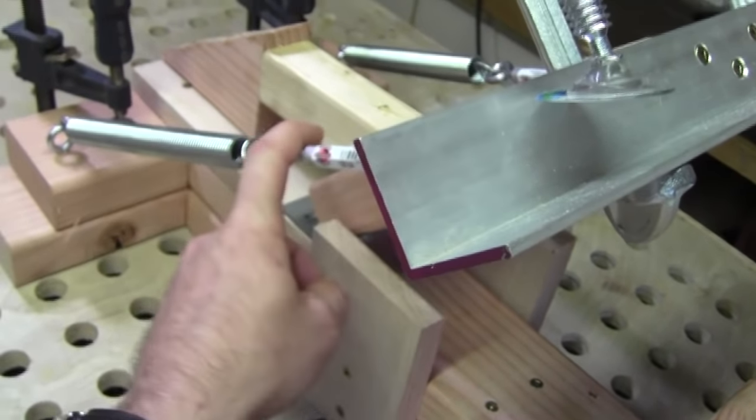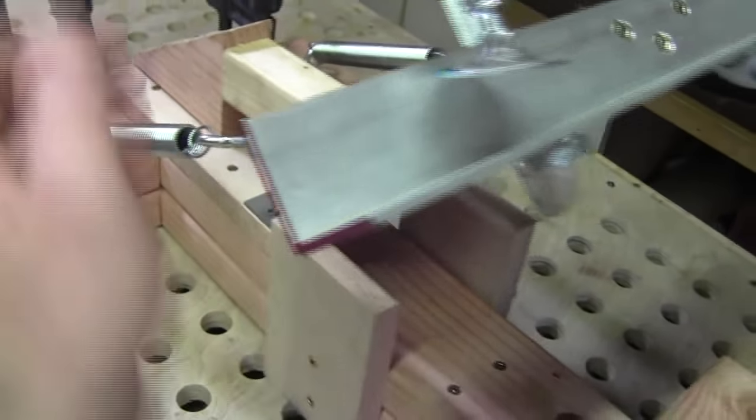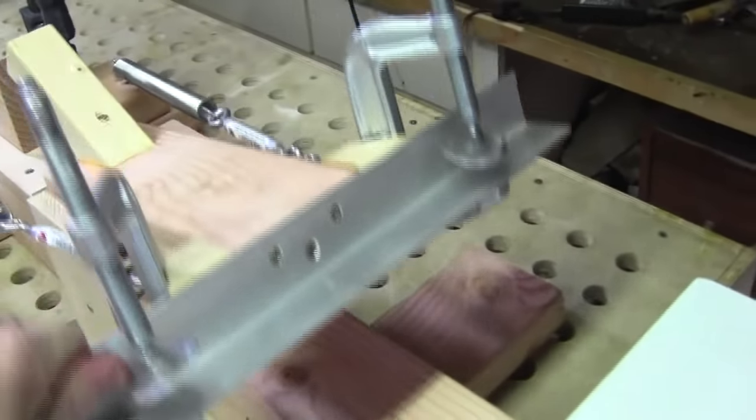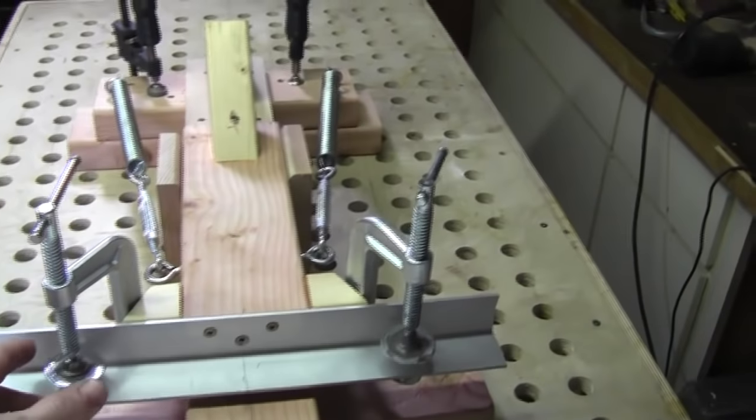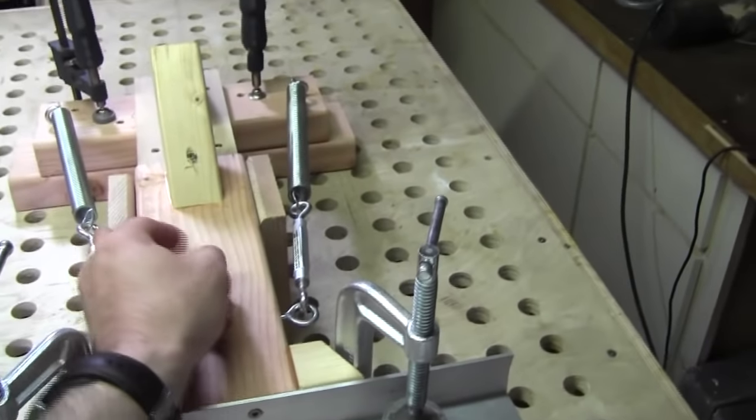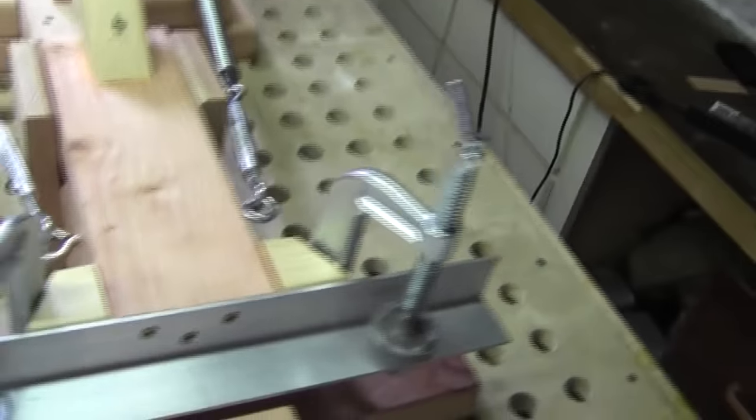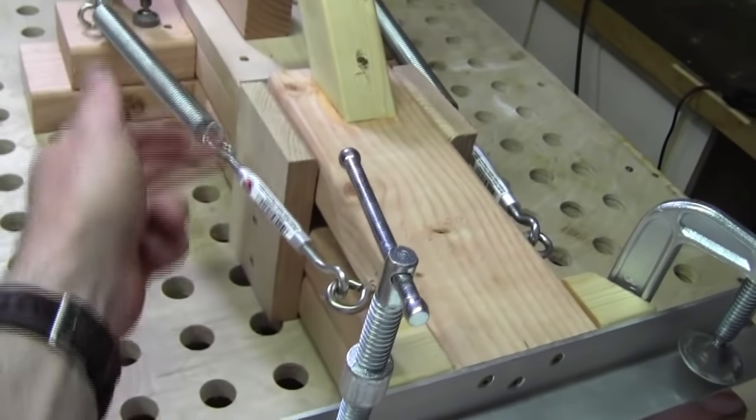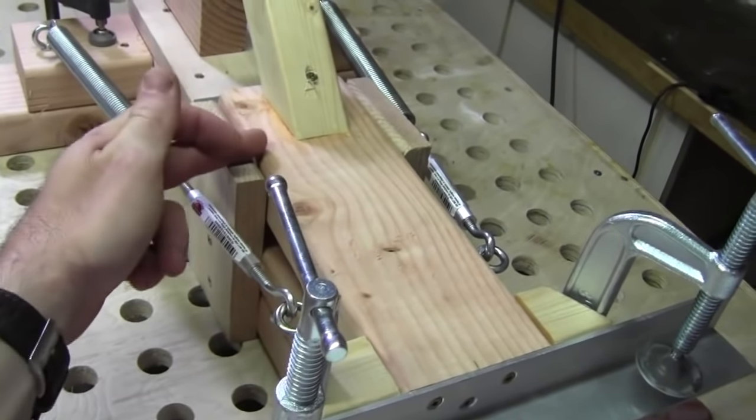But what these do, along with the springs, is they'll help guide this arm down to make sure that you are staying in line with your platen. So these are 1x4s, and they just basically, from the bottom, flush with the top here.